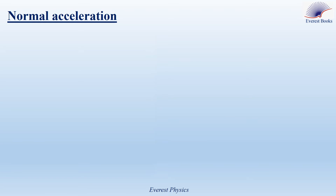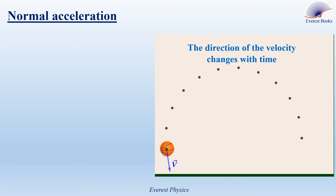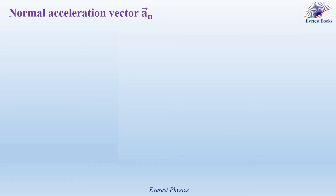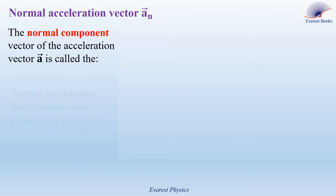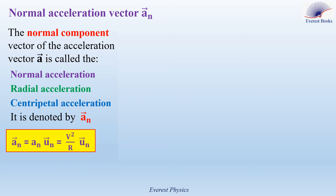Let's move to the normal acceleration. Consider a particle moving on a circular path. Observe the velocity vector of the particle. The direction of the velocity changes with time. The normal acceleration occurs due to the change in the direction of the velocity of the moving object. The normal component vector of the acceleration is called the normal acceleration, or radial acceleration, or centripetal acceleration, denoted by A_N. The expression of A_N is given by A_N u_N, which equals v² over R times u_N. A_N is the magnitude, equal to v² over R, where v is the speed and R is the radius of curvature, which will be studied later in this video.